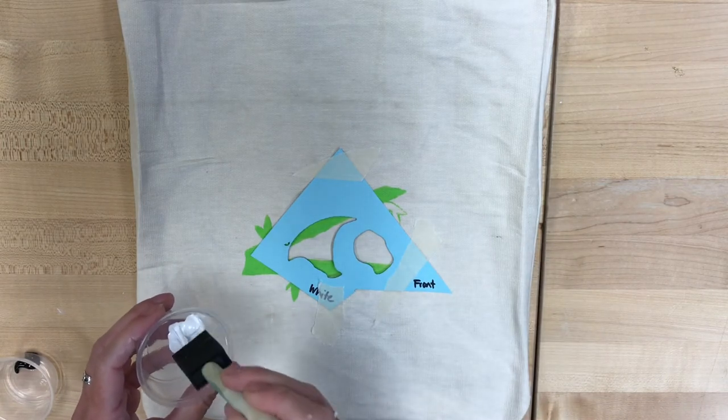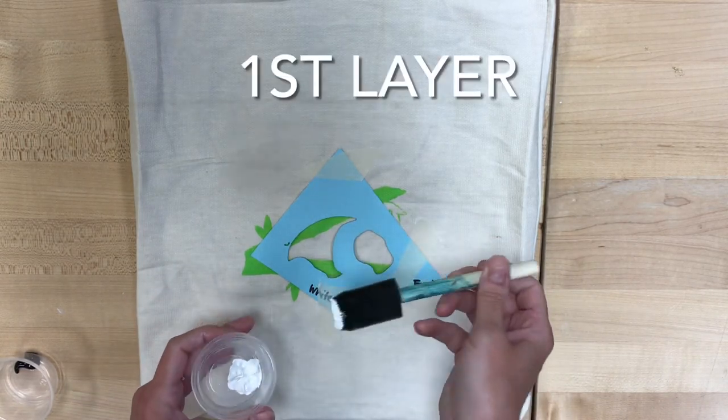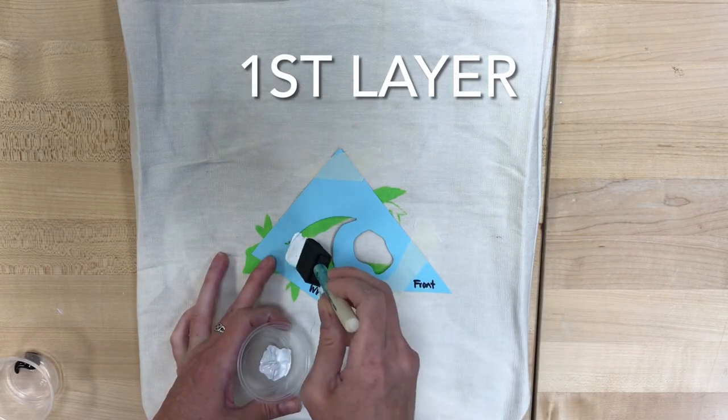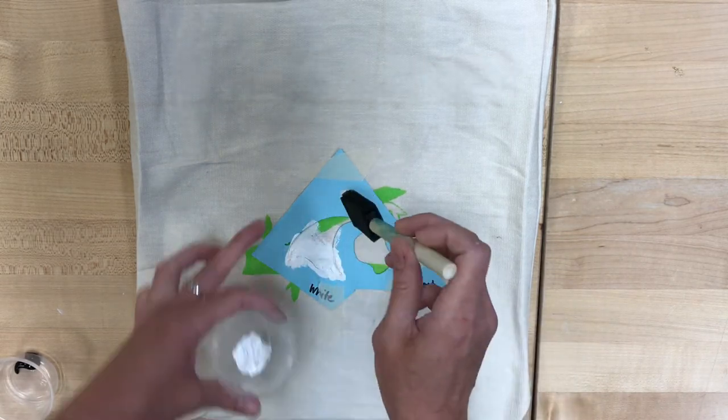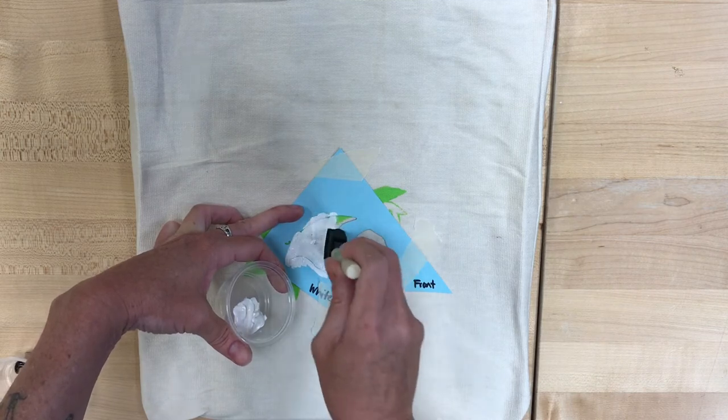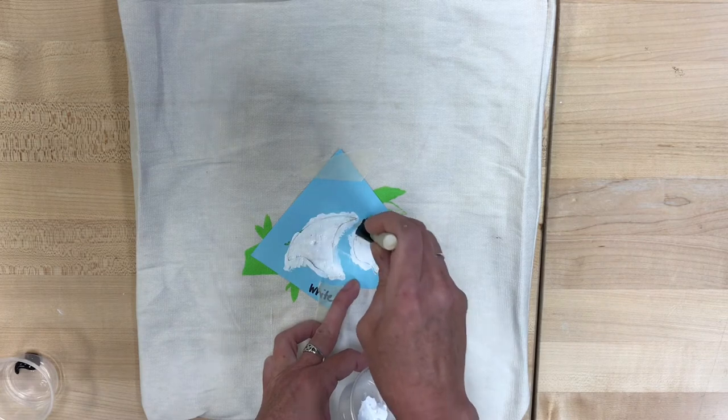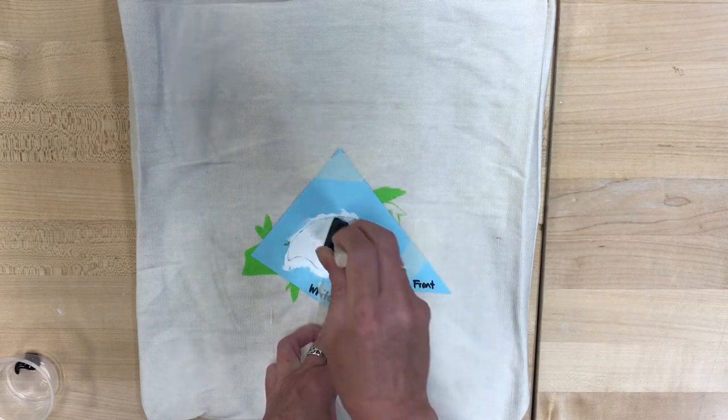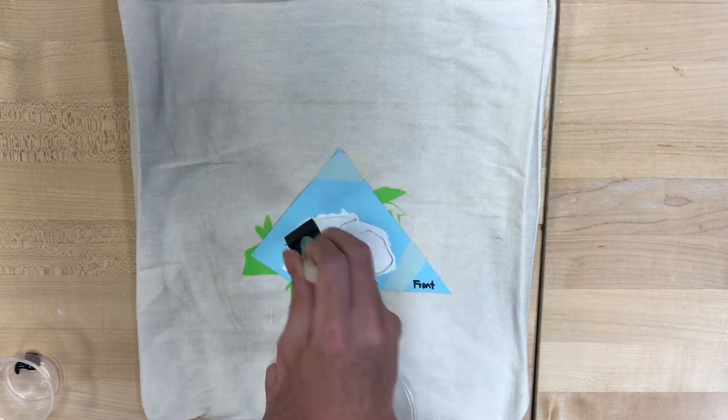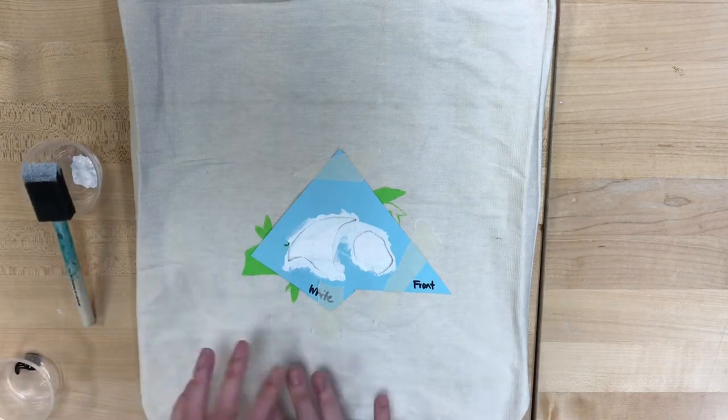And there are a couple situations where you're putting a lighter color over a darker color. And in those instances, we're going to use multiple layers. So I'm showing you this first layer here. And then we're gonna let that first layer completely dry after we get it all the way to the edges. So that's the first layer, gonna let it dry.